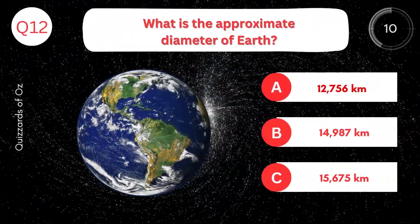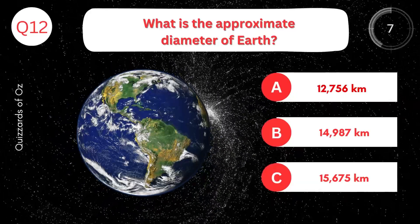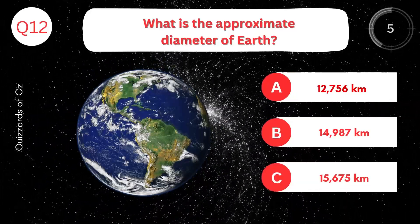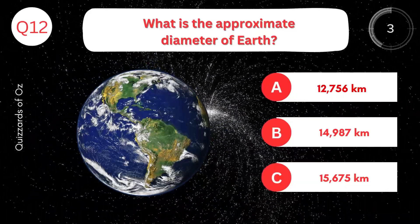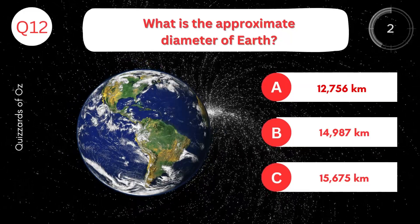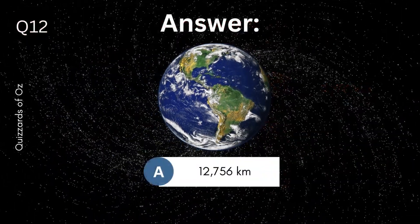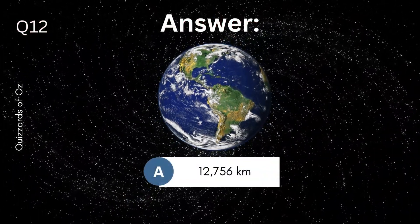What is the approximate diameter of the Earth? 12,756 kilometers.